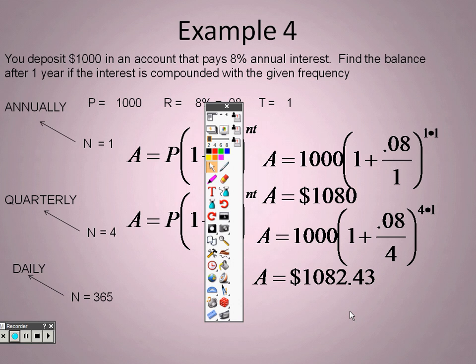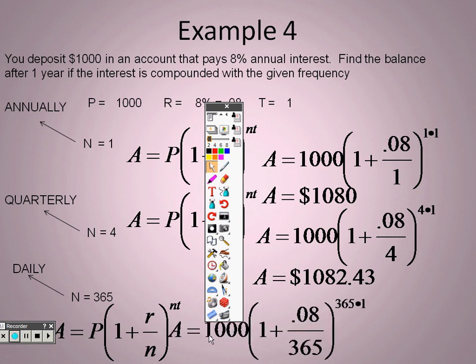And finally, let's calculate daily. That means n is 365 because there's 365 days in the year. So here's the formula again. Once again, P is still 1000, r is still 0.08 for the rate, t is still 1, it's just now n is 365. So I plug in 365 here for n and I find out I get $1083.28.